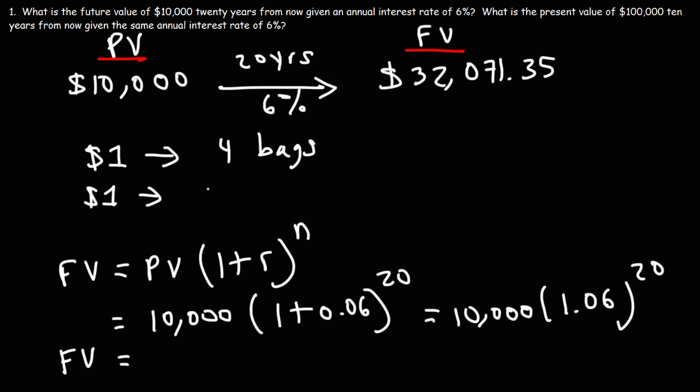In the present, $1 can buy you one bag of chips. So the purchasing power of money goes down as time moves forward. You can buy a lot more stuff with a dollar today than what you will be able to buy with a dollar in the future.